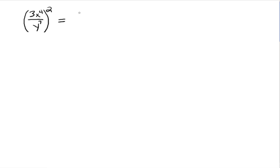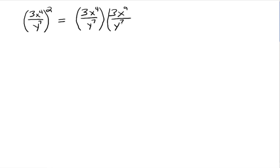We can rewrite this as 3x to the 4th over y to the 7th, times 3x to the 4th over y to the 7th. Then we can just multiply. How do you multiply fractions? You multiply straight across — numerator times numerator, denominator times denominator.